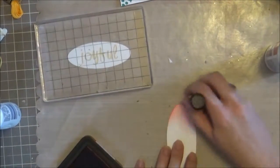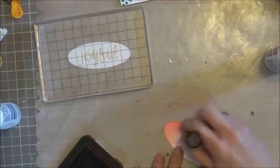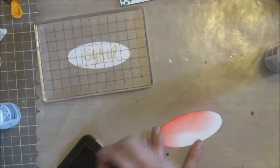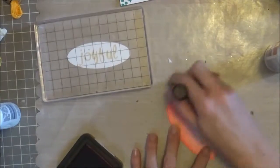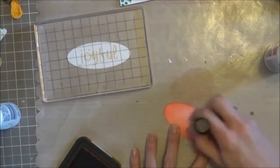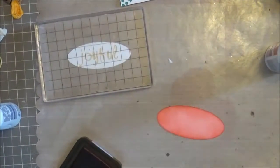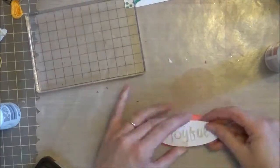I had also cut a slightly larger oval and I'm just directly inking that with my festive berries. This will serve as just a little mat around my joyful sentiment. This is one of my favorite techniques—I love how everything matches.